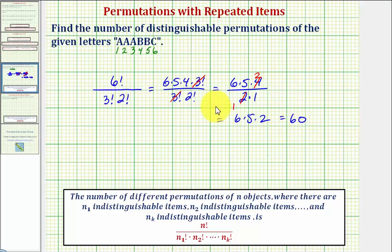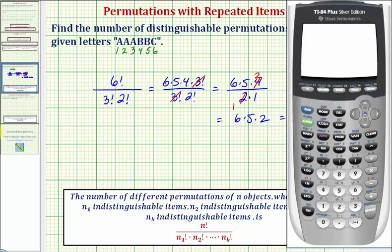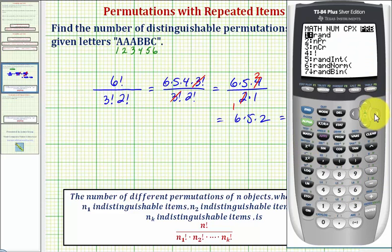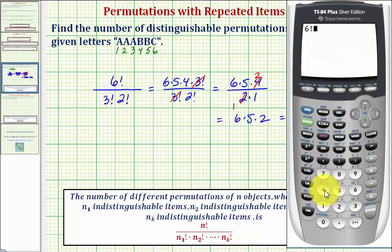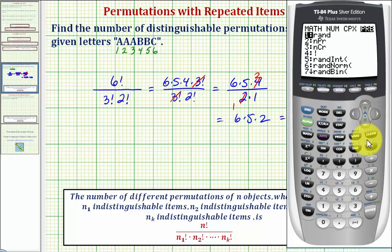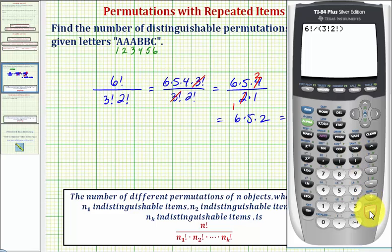Let's also check this on the graphing calculator. To do this, we first want to enter a six factorial, so we'll press six, math, right arrow to probability, option four for factorial, divided by, in parentheses, three factorial times two factorial. So three, math, probability, number four or option four, and then two, math, probability, option four one more time, close parenthesis, and enter. Which does verify our answer is correct.